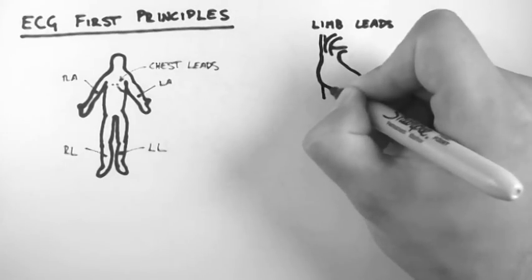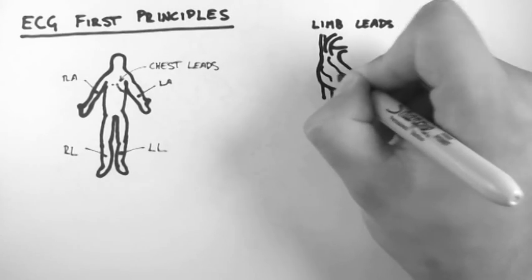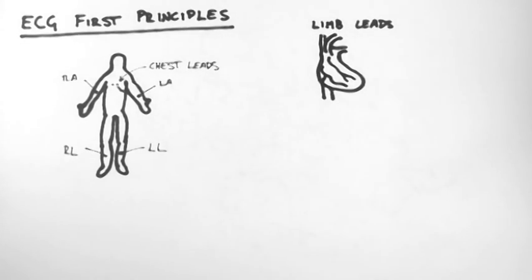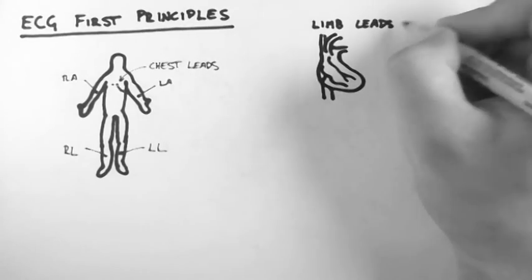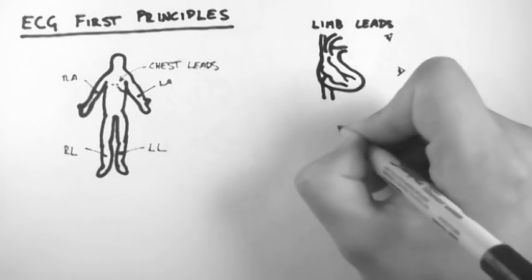So if I draw up a heart like this and we're looking at it from the anterior aspect, we can think of these leads as little eyes that each see the heart from a different angle.